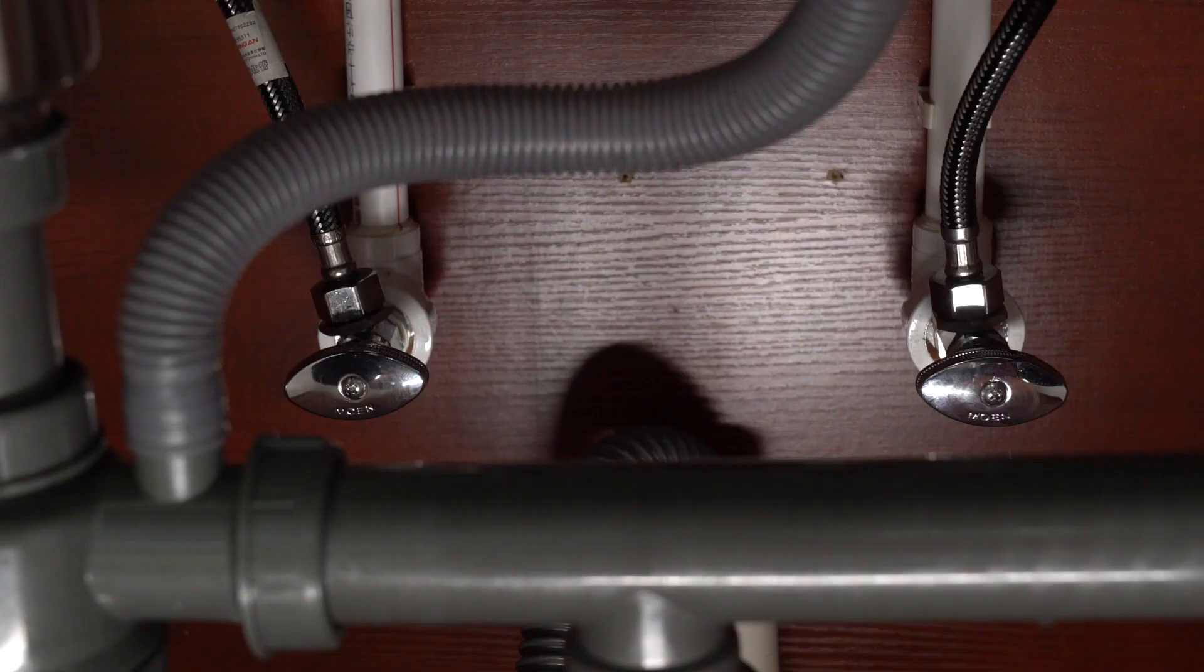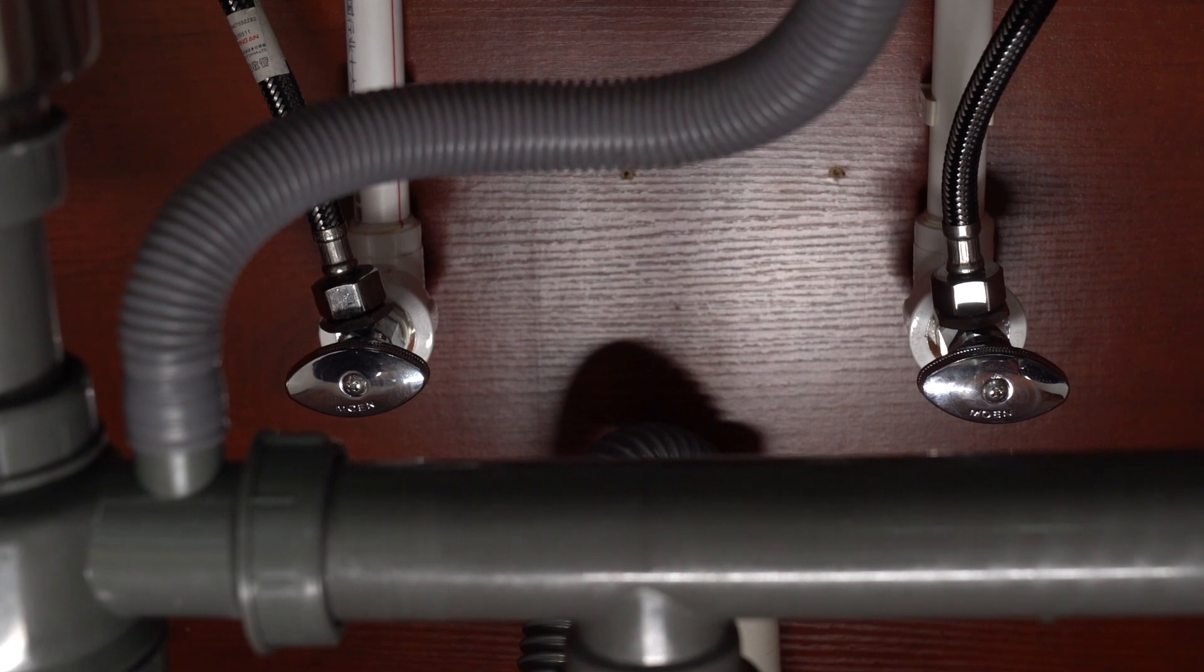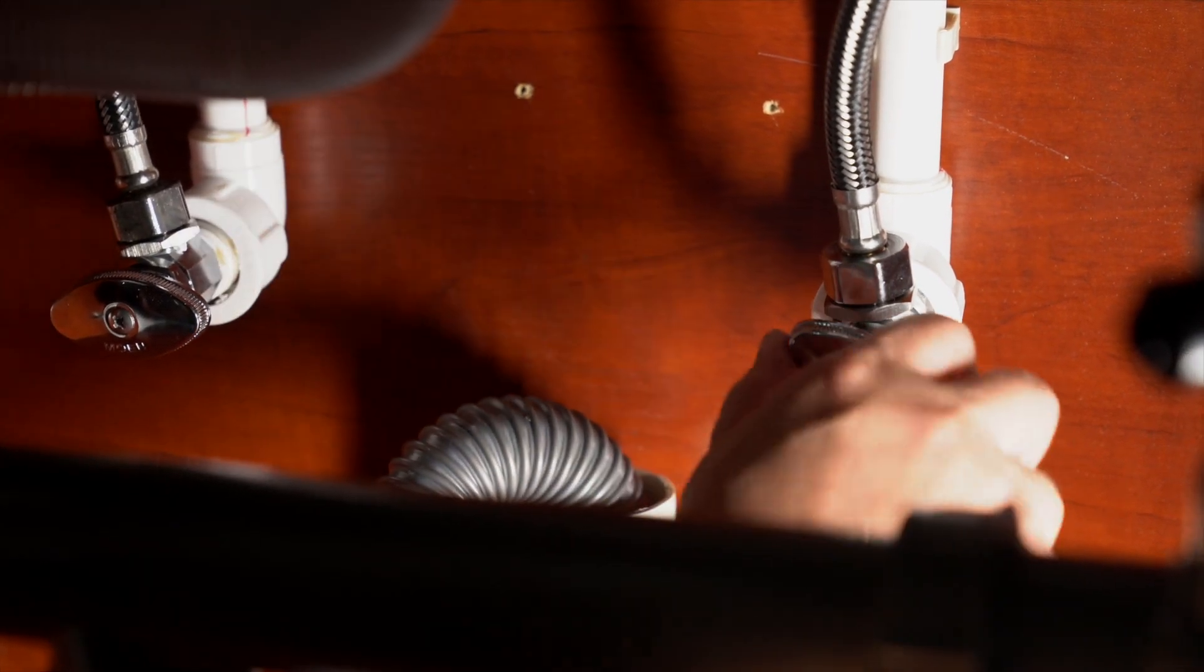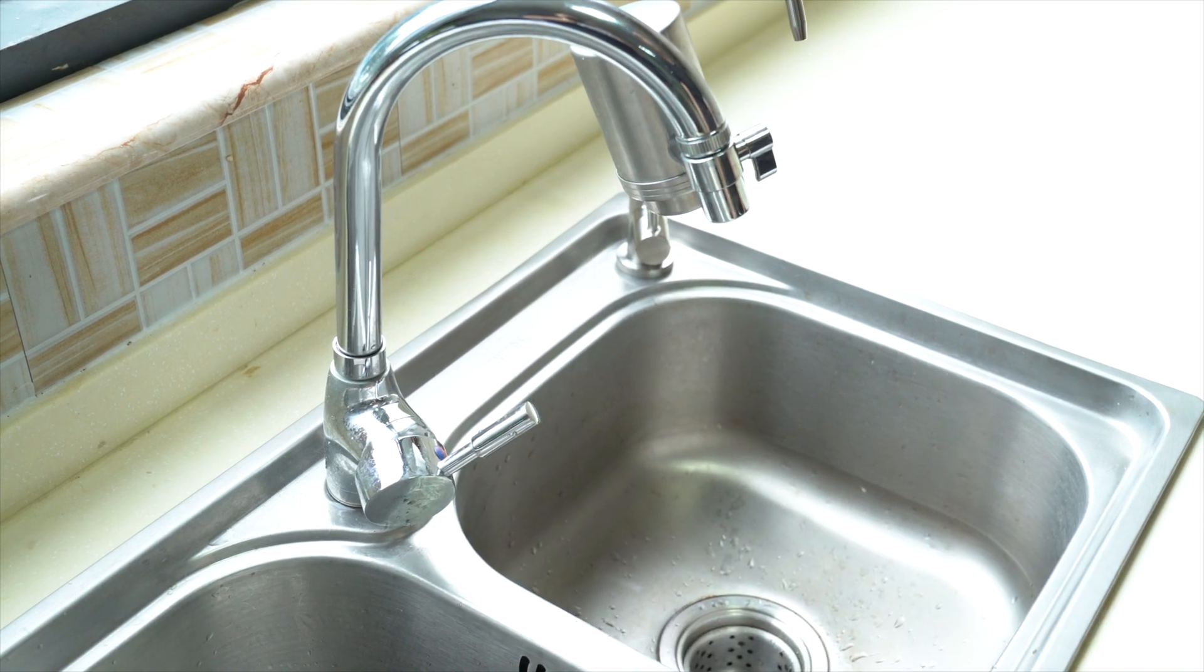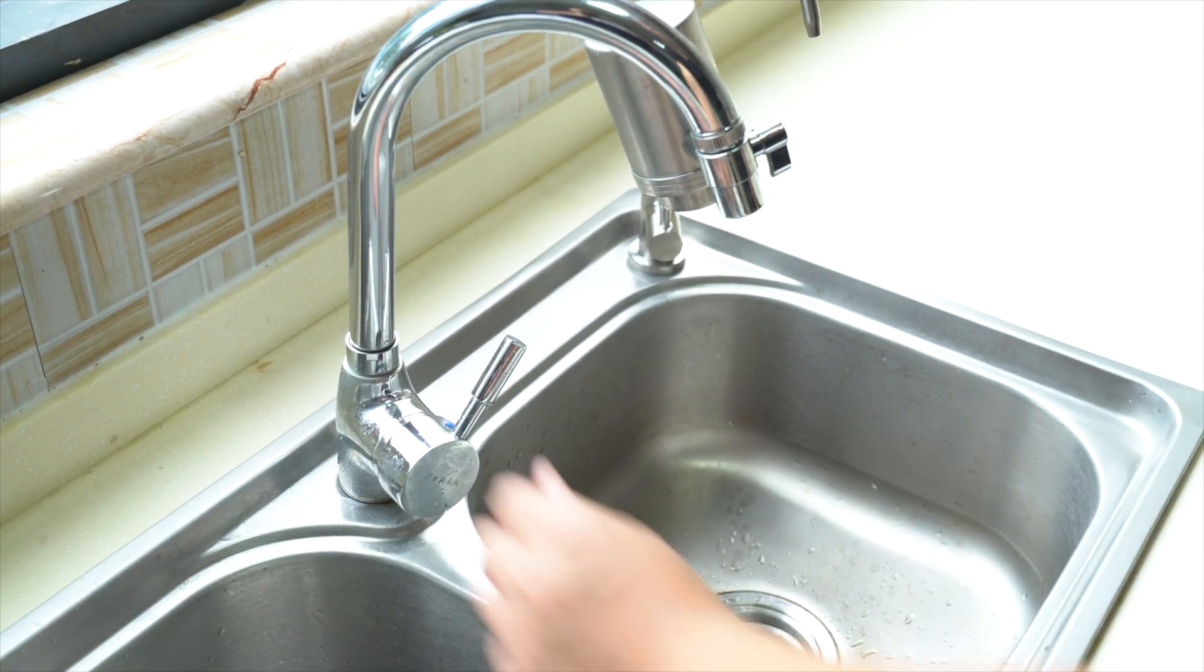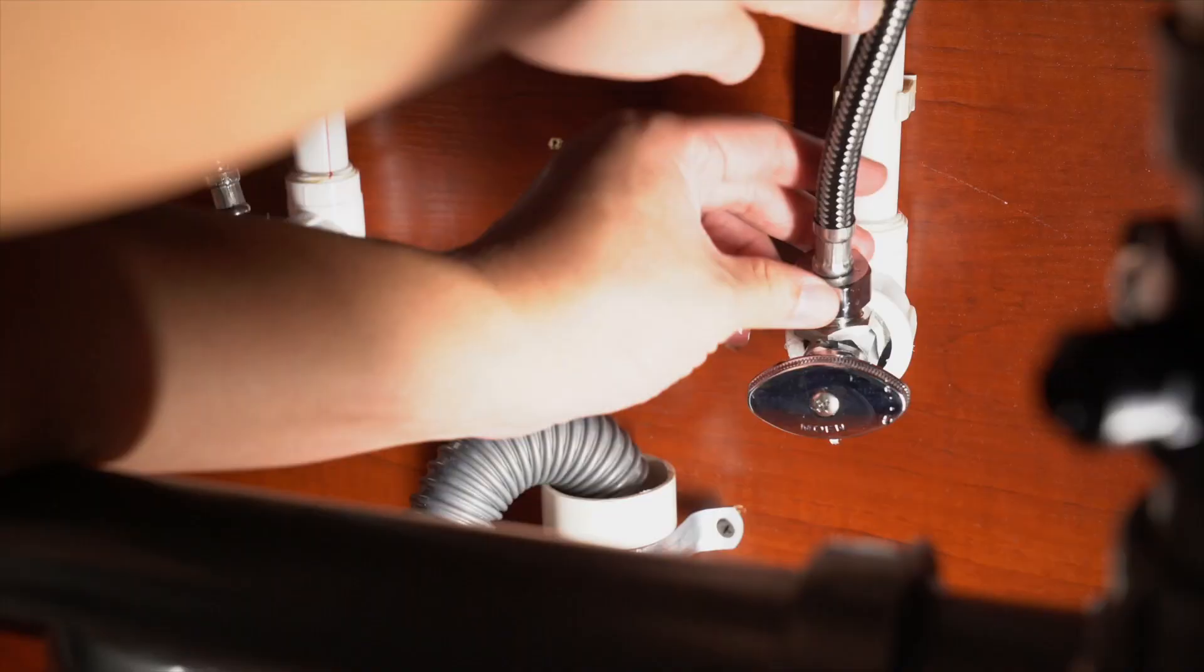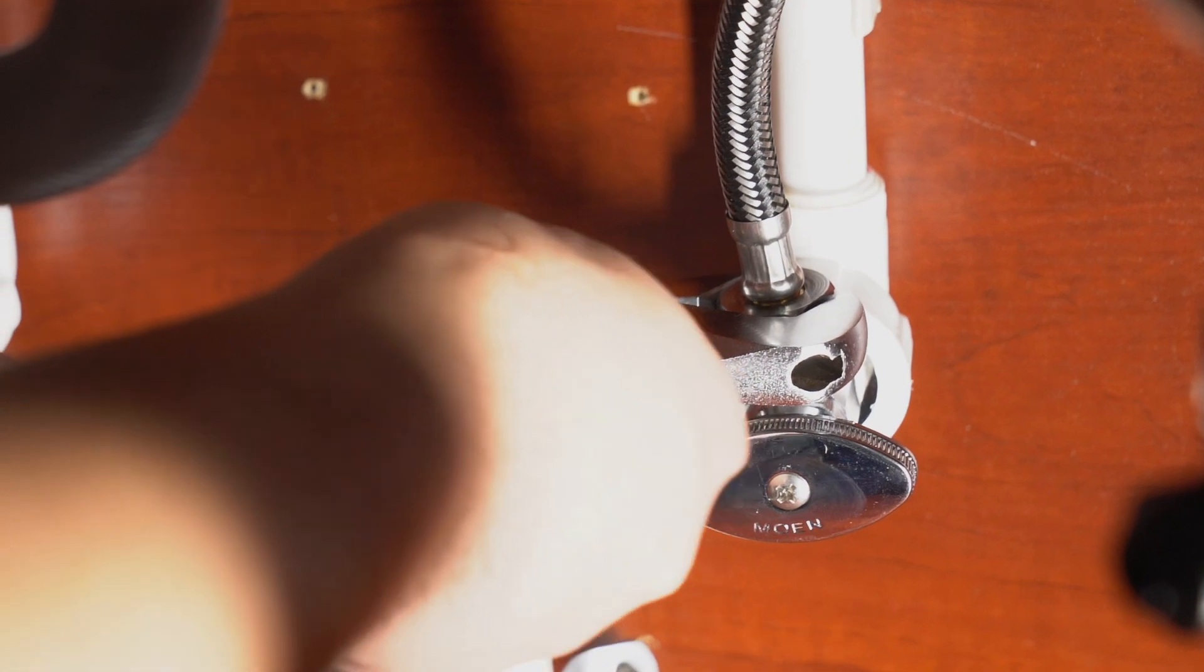Cold water shutoff valve to the faucet is used to isolate the water supply. Before we start, turn off the cold water shutoff valve to the faucet. Open the cold water sink faucet to release the pressure. Turn off after the pressure release is completed. The existing tubing on the cold water shutoff valve feeds the faucet. Now loosen it with a wrench.